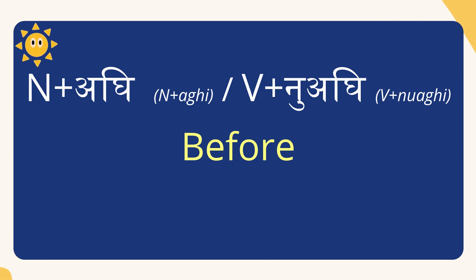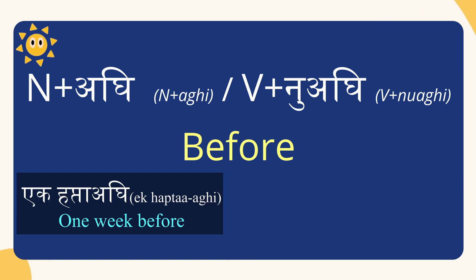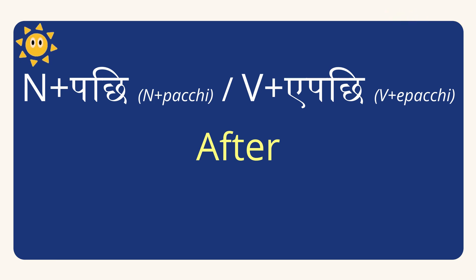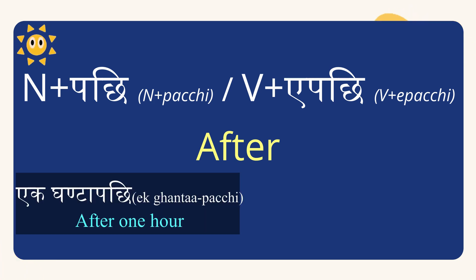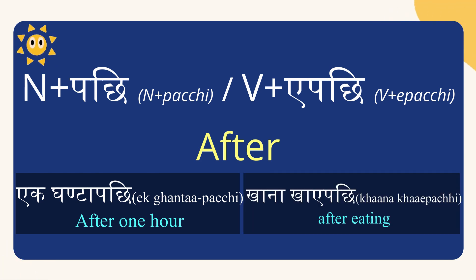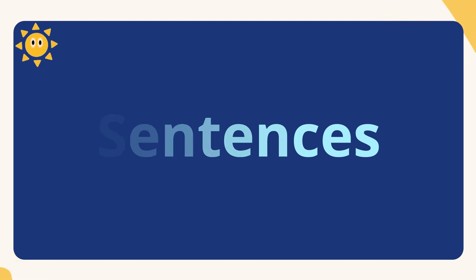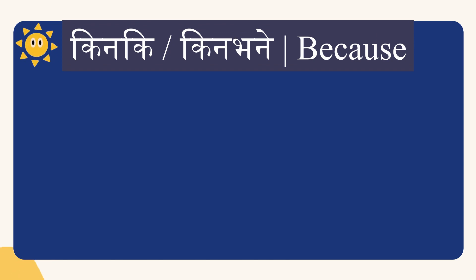With a verb, 'before' becomes verb plus nu aghi. For example, ek hapta aghi means 'one week before', and khanu aghi means 'before eating'. Similarly, for 'after' with a noun, we use pachi — ek ghanta pachi means 'after one hour'. With a verb, 'after' becomes verb plus a pachi — for example, khana khaye pachi means 'after eating food'.